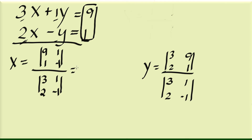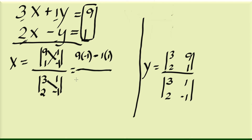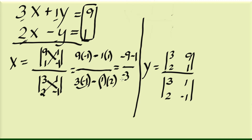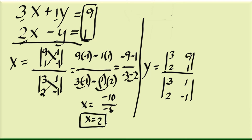Now we're ready to do the arithmetic. The determinant formula: multiply the diagonal numbers — 9 times negative 1 — always minus after that — then multiply the other diagonal: 1 times 1. Over: diagonal 3 times negative 1, minus diagonal 1 times 2. Simplifying: 9 times negative 1 is negative 9, minus 1, over negative 3 minus 2. The numerator is negative 9 minus 1 which is negative 10, over negative 3 minus 2 which is negative 5. So negative 10 over negative 5 is positive 2 — that's our x value.